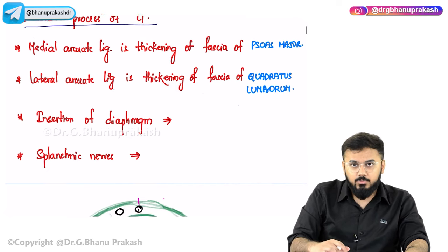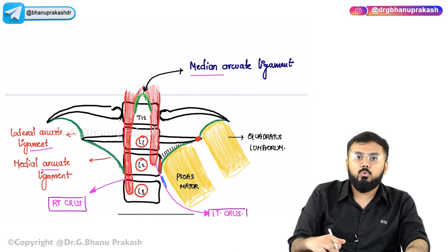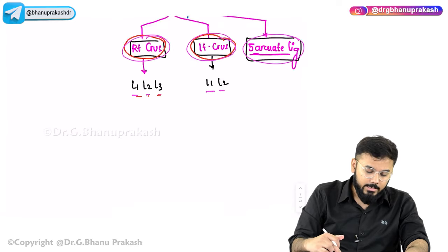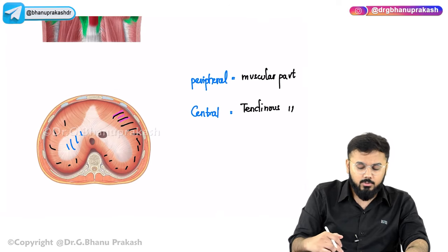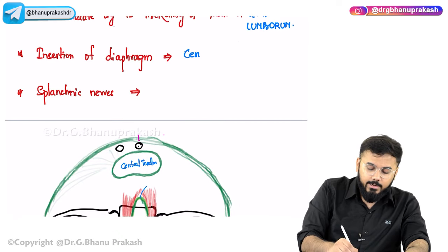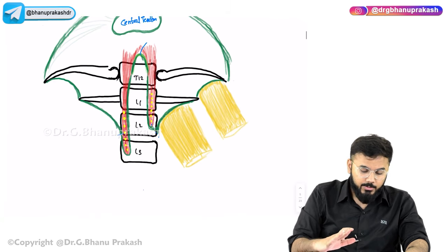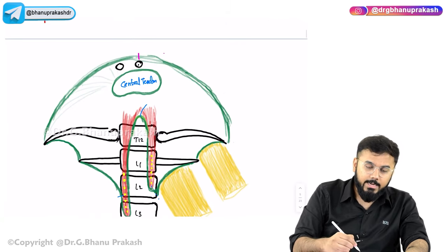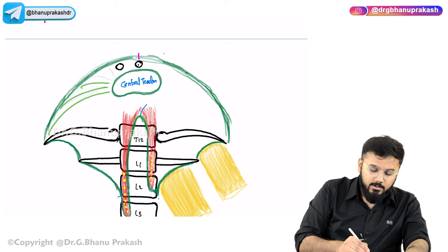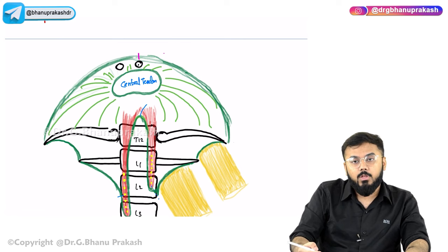After discussing the origins, all these muscles insert into the central tendon. The central wide part is the central tendon where all the muscles are inserting. The entire muscle fans inward and attaches to the central tendon.